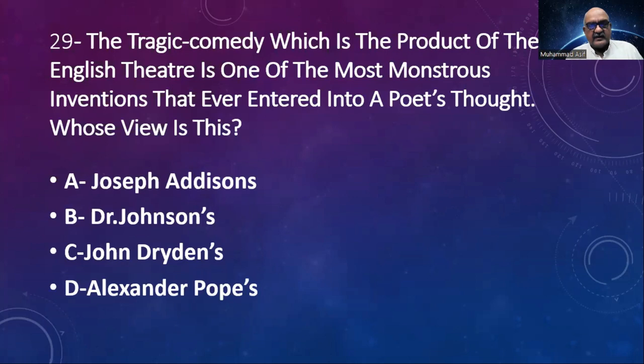Number 29: 'Tragicomedy, which is the product of the English theatre, is one of the most monstrous inventions that ever entered into a poet's thought.' Whose view is this? Options: Joseph Addison, Dr. Johnson, John Dryden, Alexander Pope. The answer is Addison's.